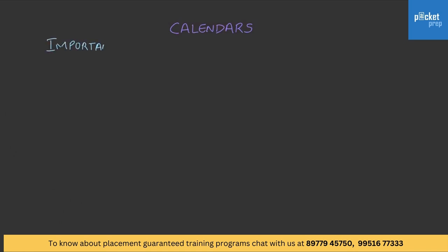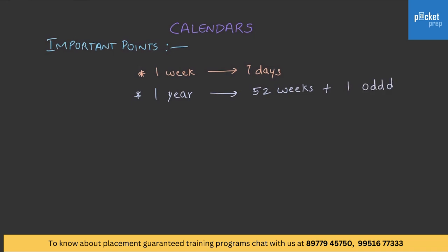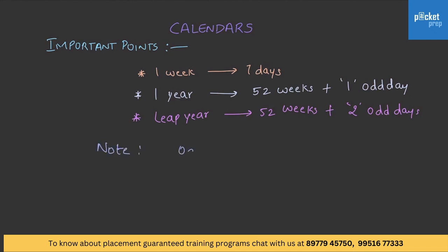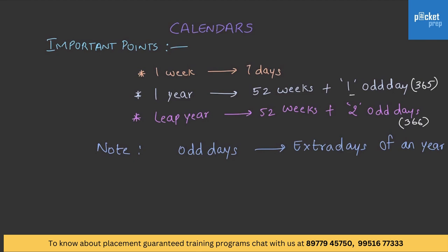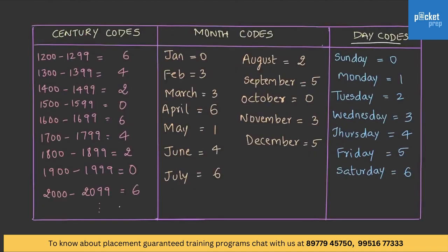Before we get into the topic, there are a few points to memorize. A week consists of seven days. A normal year consists of 52 weeks plus one odd day. A leap year consists of 52 weeks plus two odd days. Odd days are nothing but extra days of a year. A normal year has 365 days (364 + 1) and a leap year has 366 days (364 + 2). These extra days are called odd days.